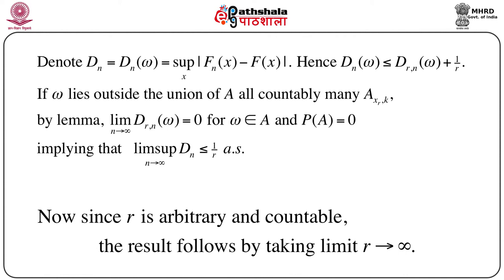This quantity is ≤ 1/r almost surely. Now r is arbitrary. Since r is arbitrary, we take the limit on both sides as r → ∞. The left side is independent of r, so taking the limit, the theorem is completely proved — lim sup D_n = 0 almost surely.